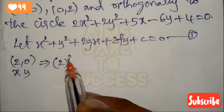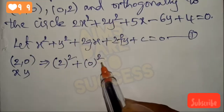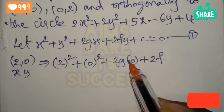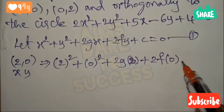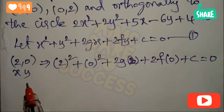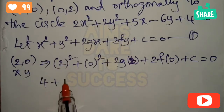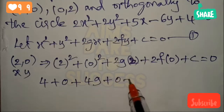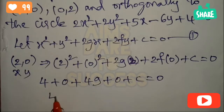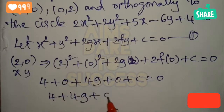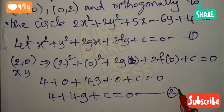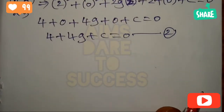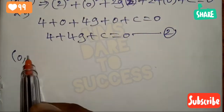Starting with the first point (2, 0): substituting in the equation of the circle, x² = 2² = 4, y² = 0² = 0, plus 2g into x-value 2, plus 2f into y-value 0, plus c = 0. This gives 4 + 4g + c = 0, which is equation 2.